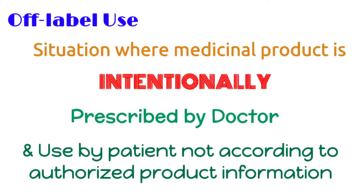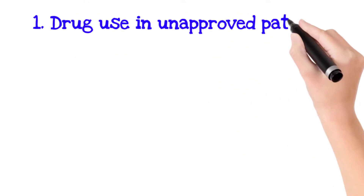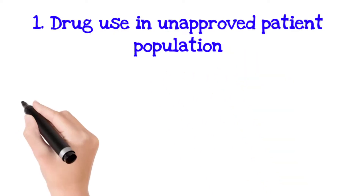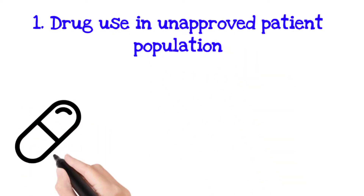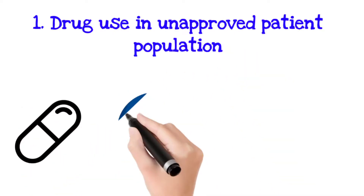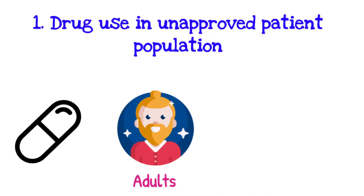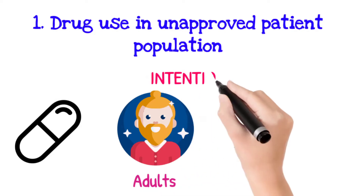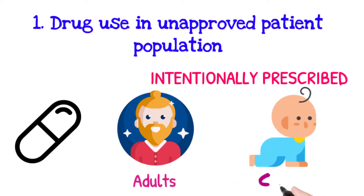Now we will see a few scenarios of off-label use of drug. The first scenario is drug use in unapproved patient population. For example, any drug approved to be consumed by adults only, however, the doctor intentionally prescribed that drug to a child for treatment of any medical condition. This is called drug use in unapproved patient population, and this scenario is treated as off-label use.